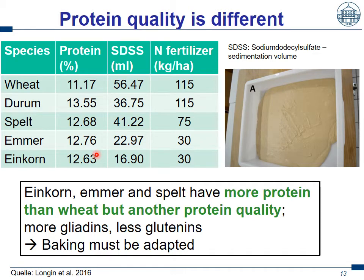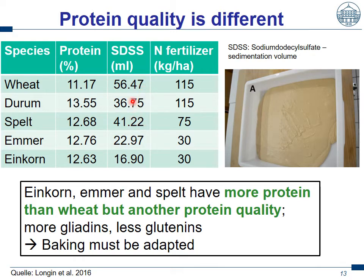However, this protein quality is completely different. I want to show this with the sedimentation volume — we used the sodium dodecyl sulfate sedimentation volume. We had an average of 56 ml for wheat, but there was poor and good wheat inside. The best quality wheat in Germany was about 80 ml. We see that spelt is already considerably lower than bread wheat — but let's formulate it positively, it's still in some distance to bread wheat. But emmer and einkorn is far away from that quality of bread wheat.